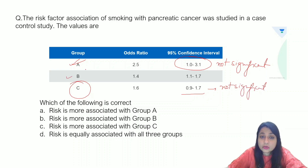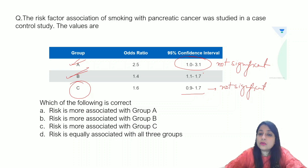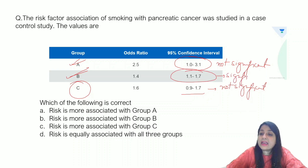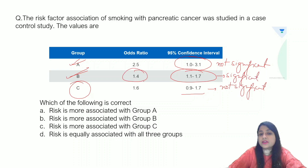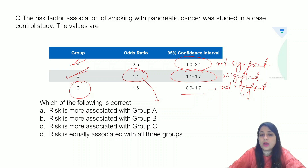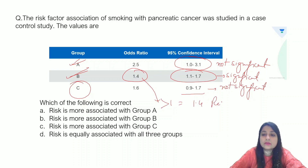But if you look at Group B — is one included in the interval? No. So it is significant. Now once you get a significant result, look at the odds ratio: it is more than 1, it is 1.4. So this becomes a risk factor.